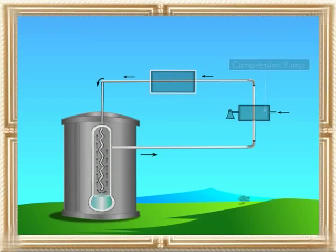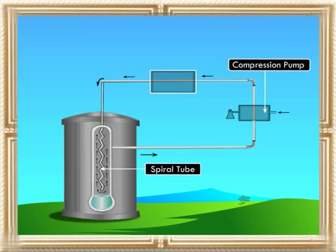Let's see how we can manufacture Nitrogen from air in a laboratory. First, understand the apparatus. It has the following parts: compression pump, spiral tube, vacuum, and nozzle. We are now ready to manufacture Nitrogen by fractional distillation of liquid air.